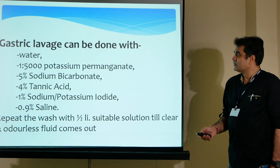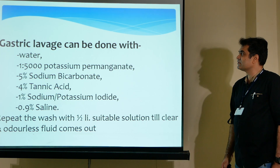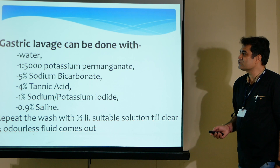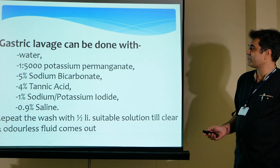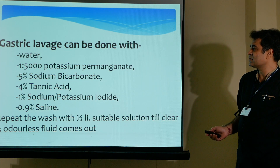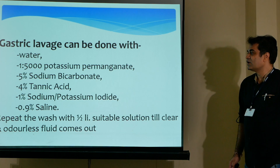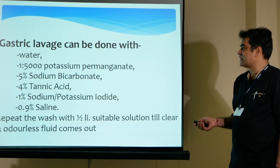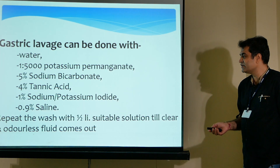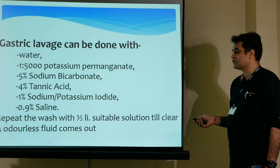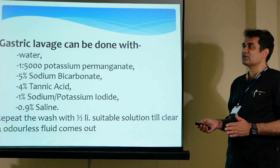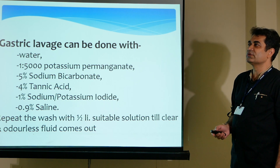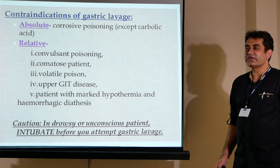Various chemicals used for gastric lavage include: plain water if nothing else is available; potassium permanganate at 1:5000 strength; 5% sodium bicarbonate; 4% tannic acid; 1% sodium potassium iodide; or 0.9% saline. Repeat the wash with half a liter of suitable solution until clear and odorless fluid comes out.